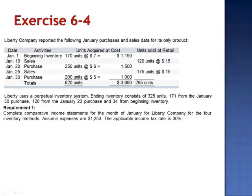Exercise 4 is a continuation of Exercise 3, where we calculated cost of goods sold and ending inventory using the four different inventory costing methods. This exercise asks us to complete comparative income statements for the month of January for Liberty Company for the four inventory methods. Assume expenses are $1,250 and the applicable income tax rate is 30%.